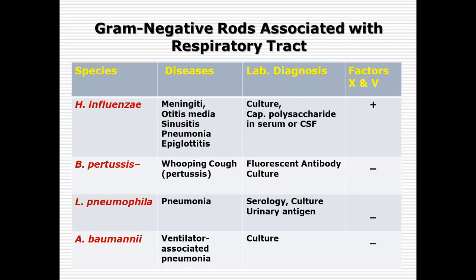Looking at Haemophilus influenzae: this organism is responsible for diseases like meningitis, otitis media, sinusitis, pneumonia, and epiglottitis. For lab diagnosis of Haemophilus influenzae, broadly speaking, we culture and isolate the microorganism from the specimen, and we can also identify it based on capsular polysaccharides present in the serum or CSF. This organism needs specific growth factors — we cannot culture it on ordinary blood agar; we need to add the X and V factors.